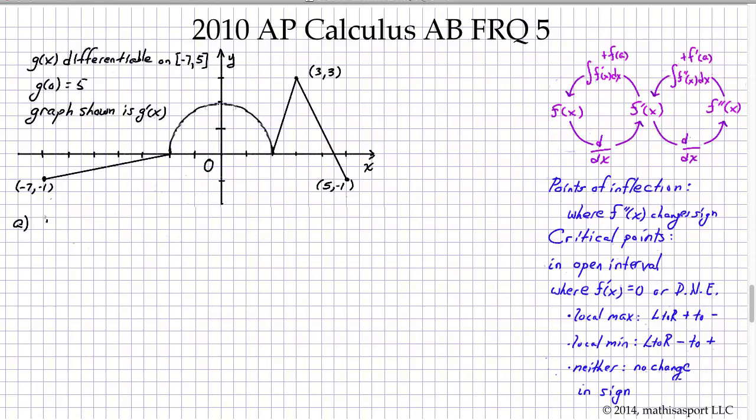The fundamental theorem tells us if we would like to know the value of the function at a particular point, it equals the value of the function at some known point, in this case g of 0, plus the integral from the known point to the point that you want of the derivative of the function. That's the fundamental theorem. The good news is we know g of 0, this is 5.